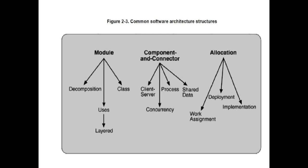Modules need to be represented with classes as we adopt object-orientedness. In components and connectors, communication is defined in the form of client-server. Components and connectors show parallel processing systems — that is, concurrency — and they also show how the corresponding data is being processed, including whether the data being processed is shared or not.